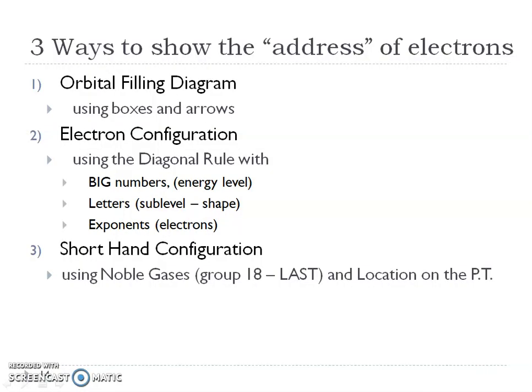There are three ways to show the address of electrons. The first way is the orbital filling diagram, which is what this video will show. The other ways are the electron configuration and the shorthand configuration. Read over that to get an idea of what we'll be discussing.